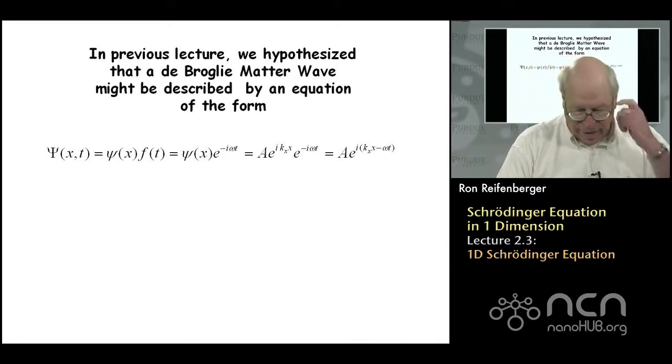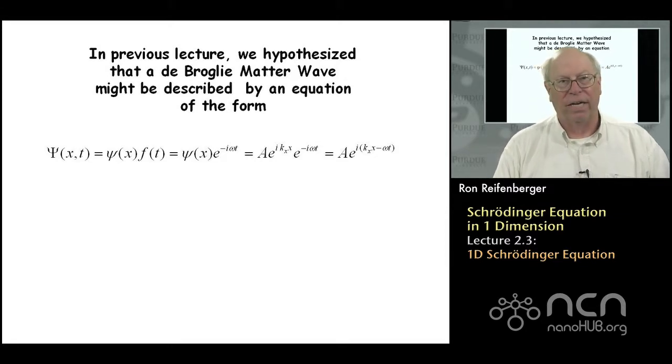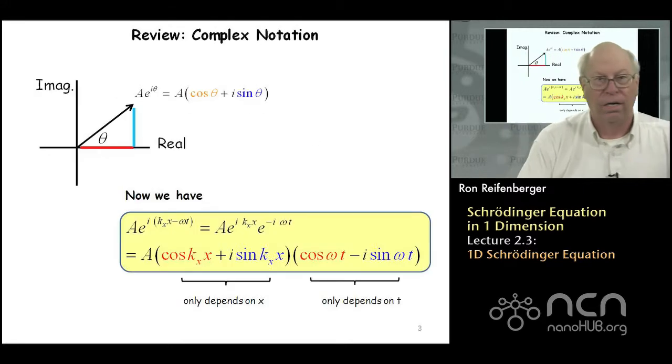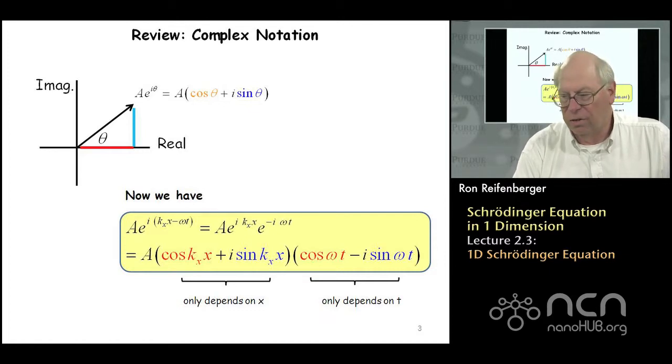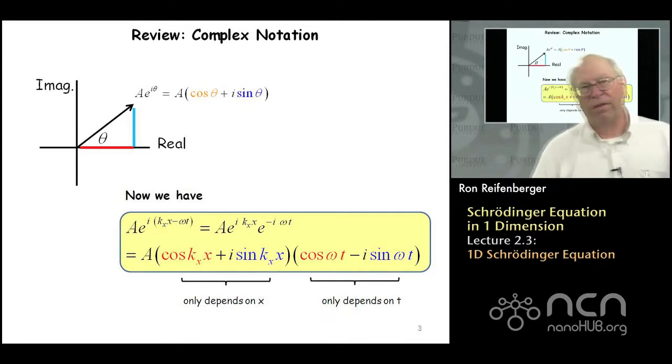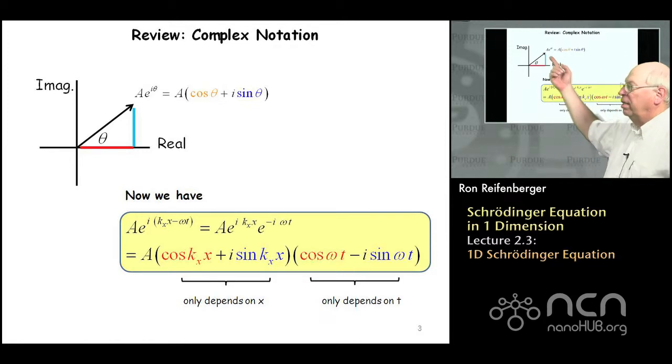It's very important at this stage that the notation and the meaning behind this arithmetic is crystal clear. So I'd like to spend just a few seconds to remind you about complex notation and to try to think about what that wave function means in terms of this exponential notation. This is a very brief review. Let me just remind you that if you have an exponential function written as A e to the i theta, this is equivalent to A multiplied times cosine of theta plus i sine theta.